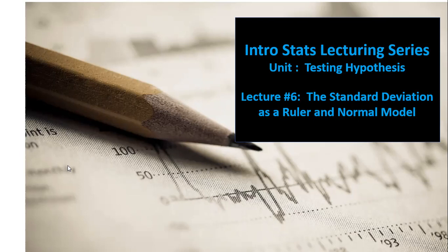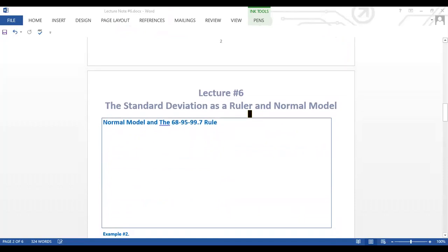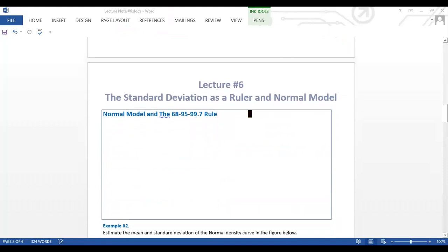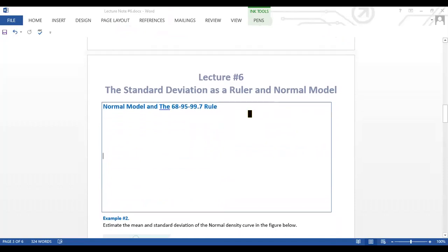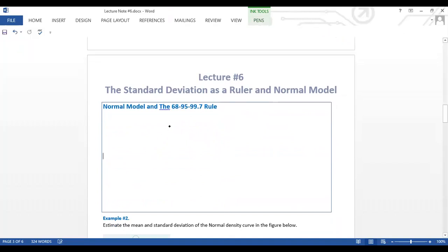Today we want to take a look at a very special model and what the z-score means here. Let's go ahead and go to our lecture notes. This is where we stopped last time. Now let's look at what we call the normal model and the 68-95-99 percent rule. So what is the normal model?